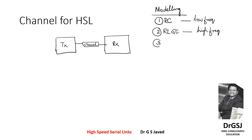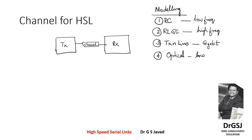The more advanced systems use a transmission line based modeling, and these are used when you are touching the gigabit range. When you are using gigabit range, you will have another kind of model where optical channels are going to be low loss systems with long transmission distance.